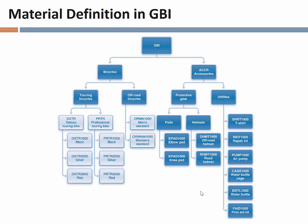Returning to material-related topics: the textbook shows a product hierarchy you'll create late in the semester. At the top is a product group leveraging your unique number, inside that are bicycles and accessories groups, inside bicycles are touring bicycles and off-road bicycles, and inside touring bicycles are deluxe touring and professional touring bikes — a hierarchy for organizing materials.